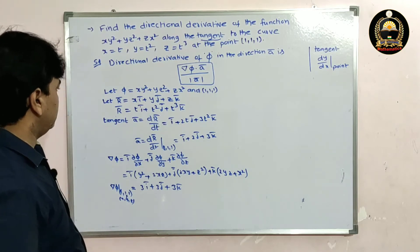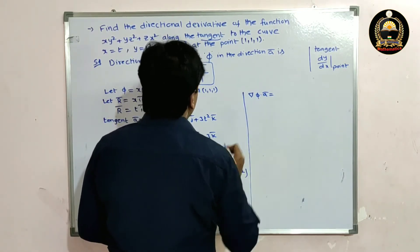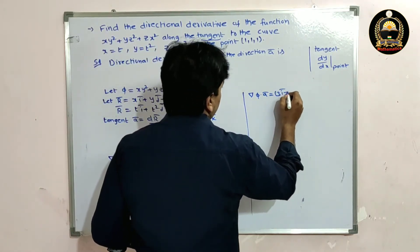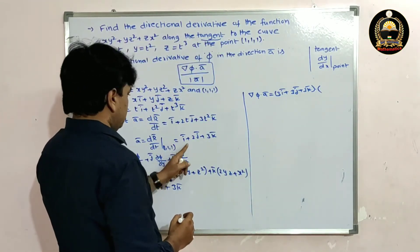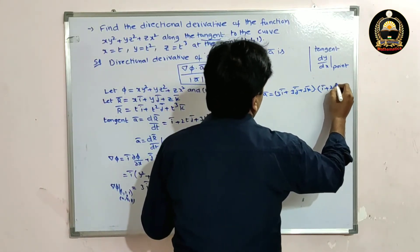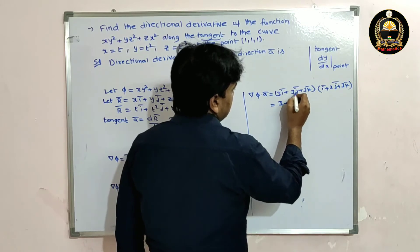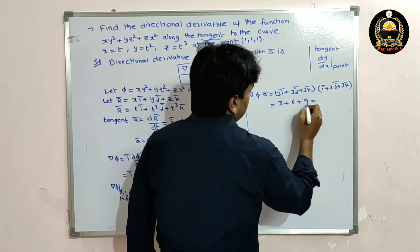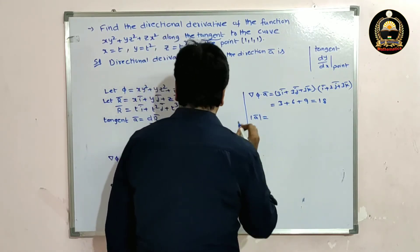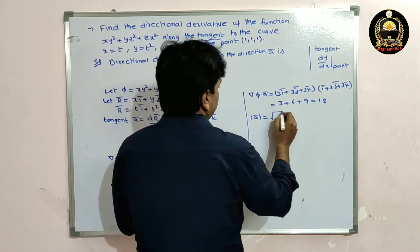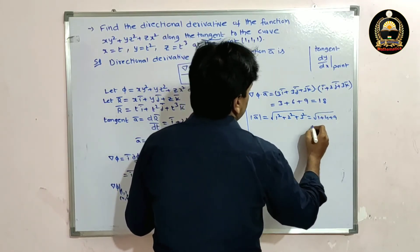Now compute ∇φ · a̅: (3i + 3j + 3k) · (i + 2j + 3k) = 3×1 + 3×2 + 3×3 = 3 + 6 + 9 = 18. And |a̅| = √(1² + 2² + 3²) = √(1 + 4 + 9) = √14.